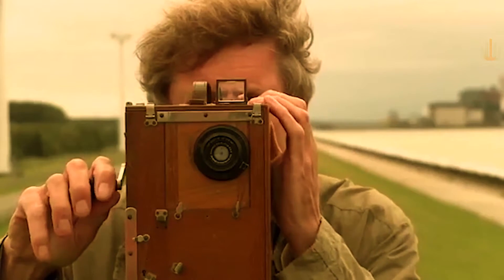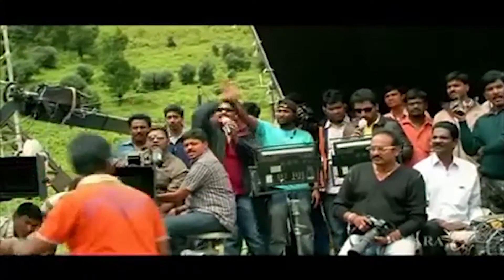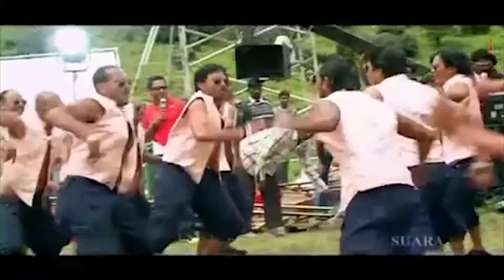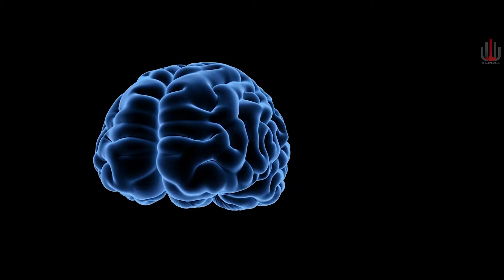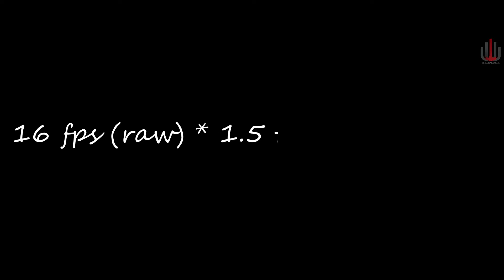In the early filmmaking era, hand-cranked cameras were used. The cinematographer would roll the camera — in fact, 'roll camera, action' is a common term, and that rolling inception started here. In the early 1900s and even before, films were not dialogue-driven or voice-over driven, so they would shoot at 16 frames per second. But as we know, the human brain perceives 24 frames per second as fluidic live motion. So in post-production, the footage was sped up to 24 frames per second.